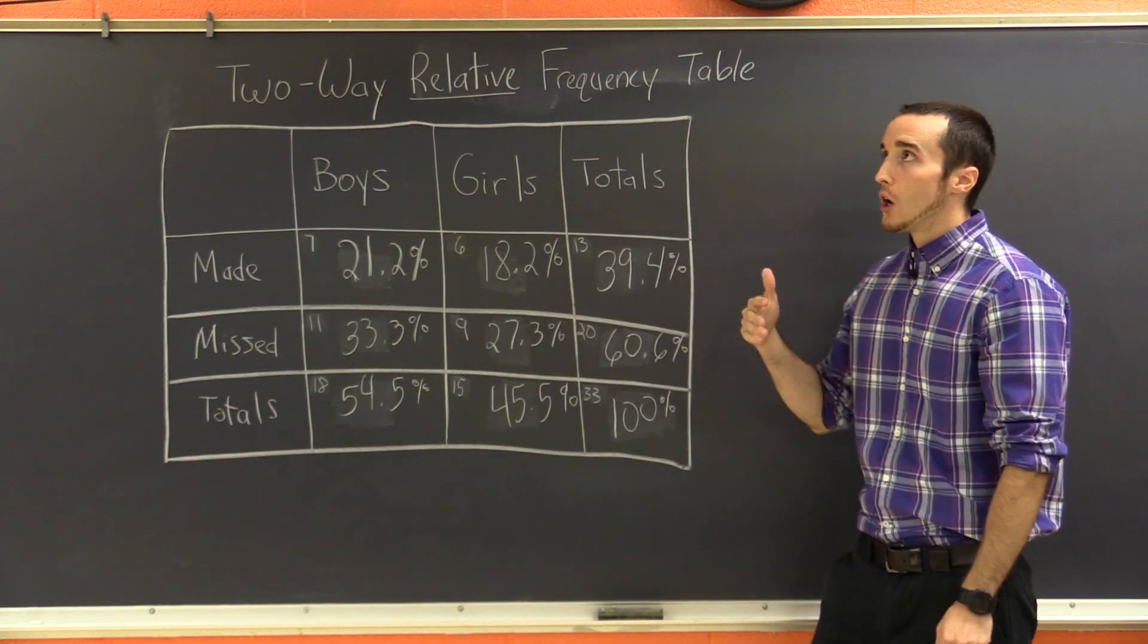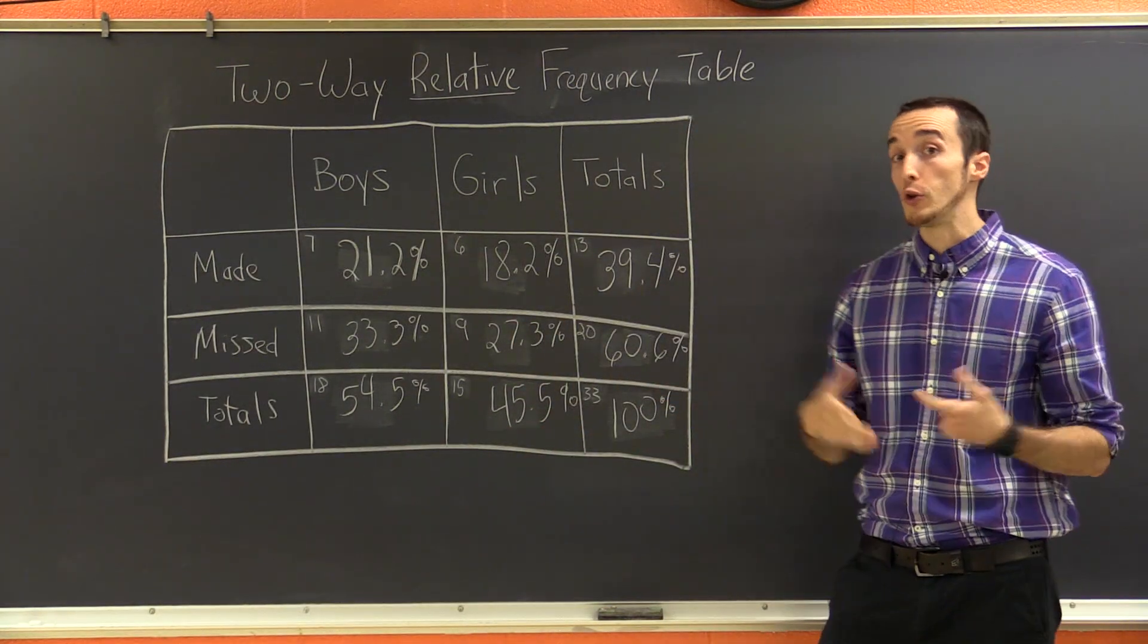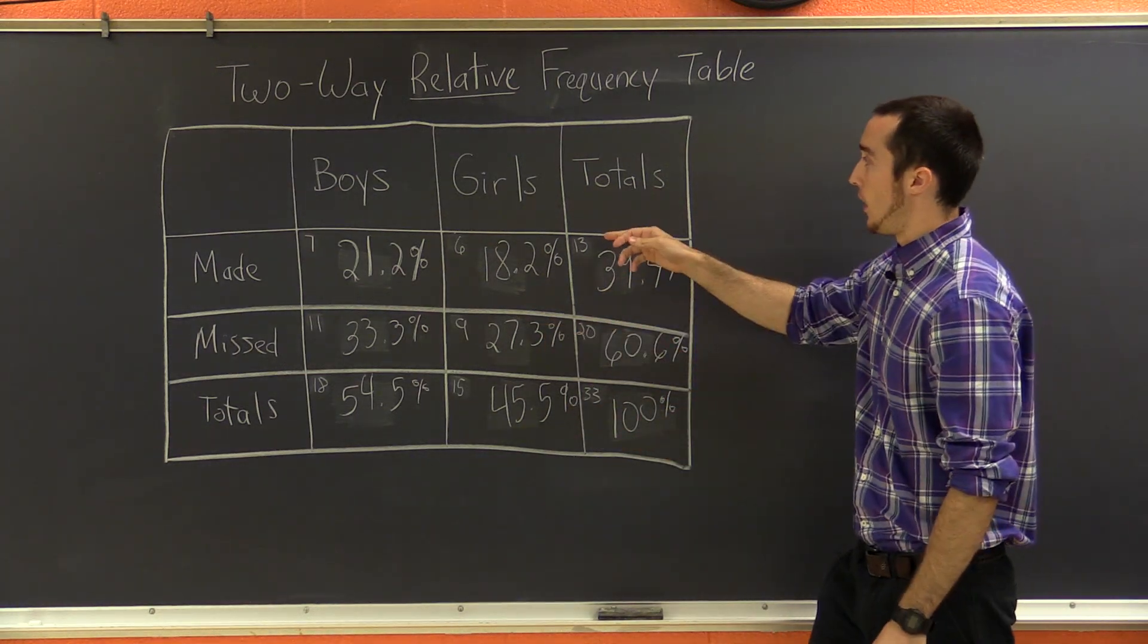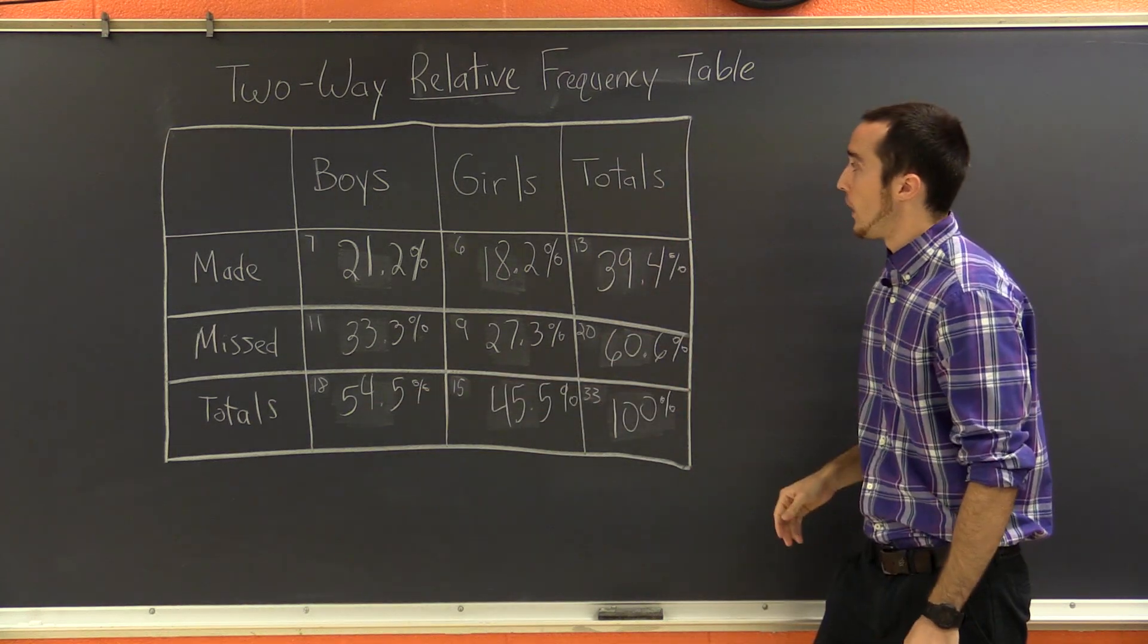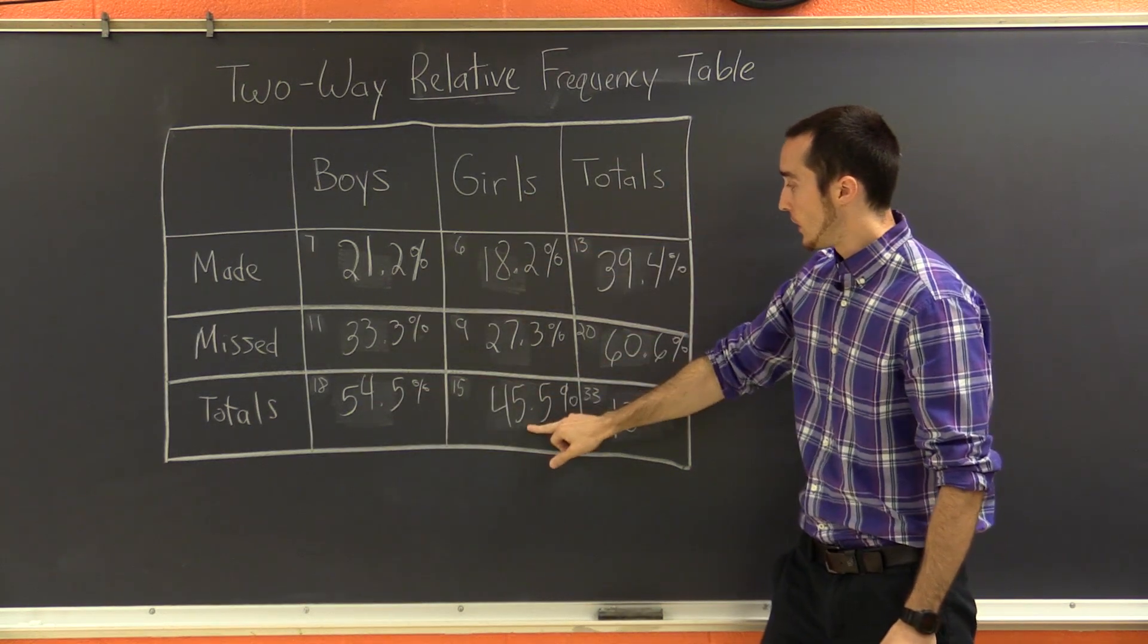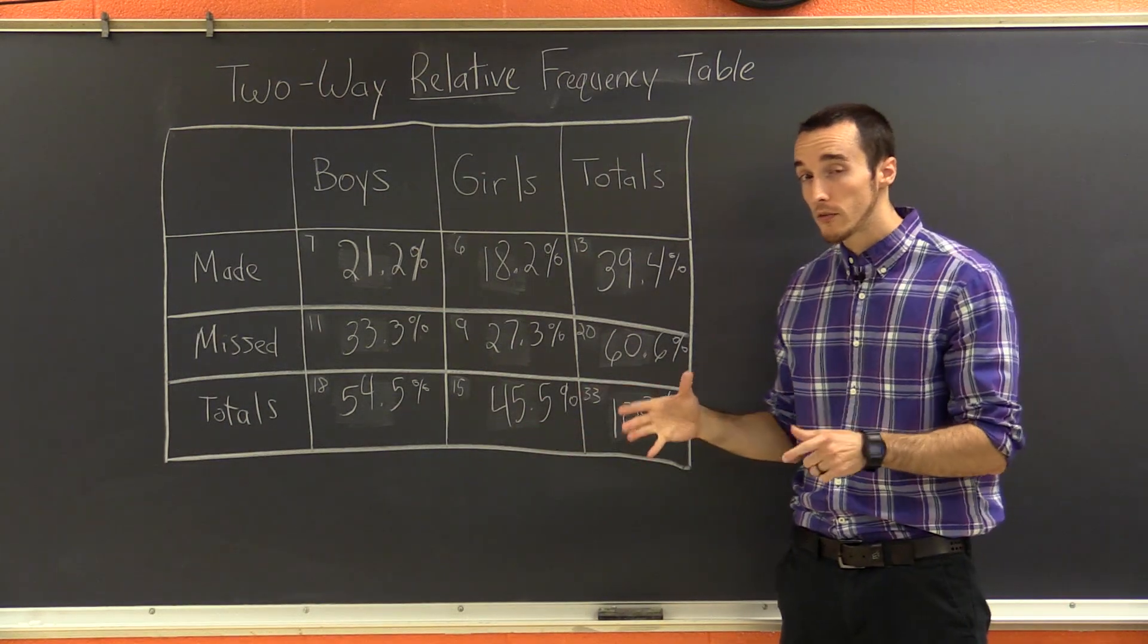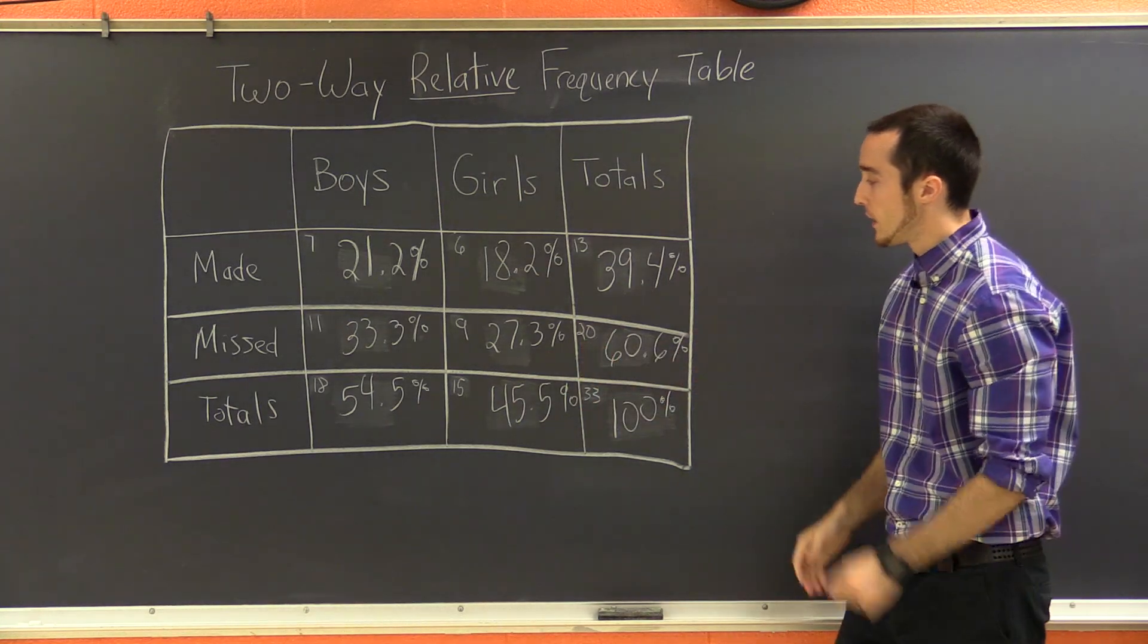So for instance, I could say, what is the marginal relative frequency of girls who played the game? Well, if you look at our table, marginal, that means it's got to be one of these numbers, and girls who played the game, well, that means the total number of girls, so that's got to be 45.5%. So marginal relative frequencies are the numbers on the outsides of the totals column or row.